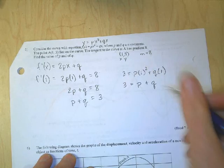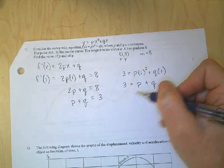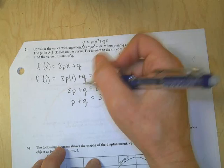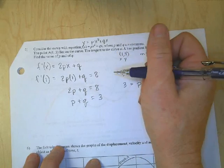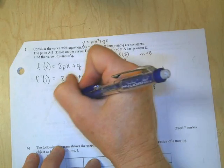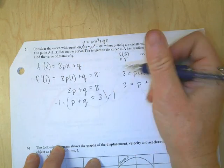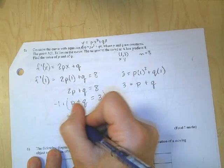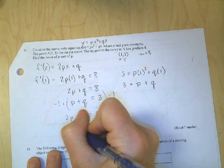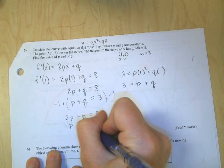I also could have solved for one of the letters and use substitution, but I'm going to go ahead and use elimination. I'm going to eliminate the Qs, but in order to do that, this needs to be a negative Q. So I'm going to multiply both sides of my equation by negative 1. So I'm going to keep the original equation: 2P plus Q equals 8. This one's going to become negative P minus Q equals negative 3.